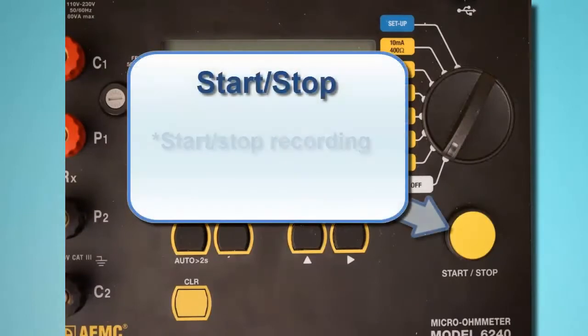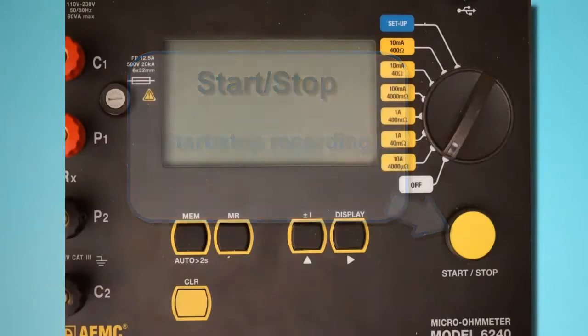Below the dial is the Start-Stop button for starting and pausing test measurement sessions. The Model 6240 interface is described in detail in the user manual that accompanies the instrument.